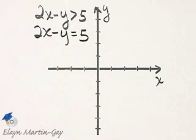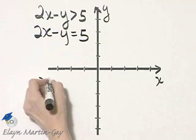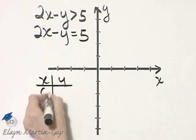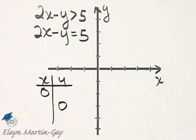So let's graph this equation, and we'll do so by finding ordered pair solutions. Why don't we find the intercepts, and that should help us.